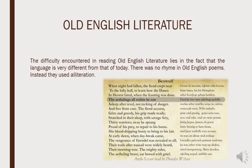The difficulty encountered in reading Old English lies in the fact that the language is very different from that of today. There was no rhyme in Old English poems; instead they used alliteration. For example: 'the eight links all within he saw,' 'asleep after,' 'free from,' 'grim and greedy,' 'snatched sleep' — all these prove that they used alliteration but not rhyming. If you look at the end words of lines — crept, gains, done, saw, danger, accursed — there is no rhyming, but we find alliteration everywhere.